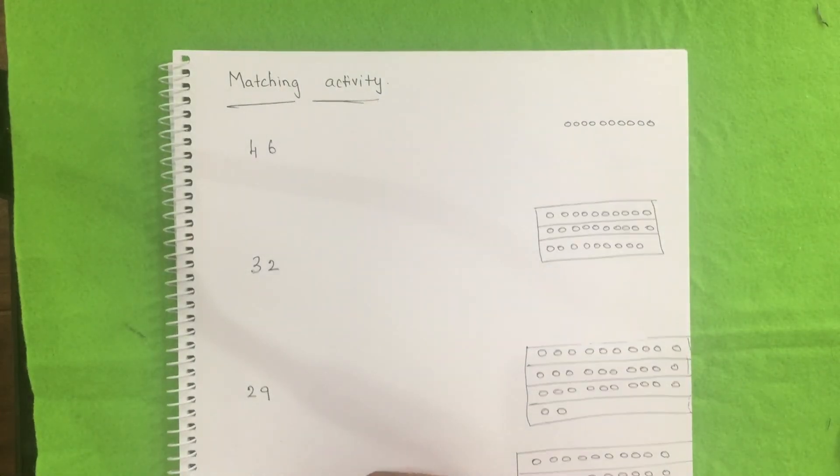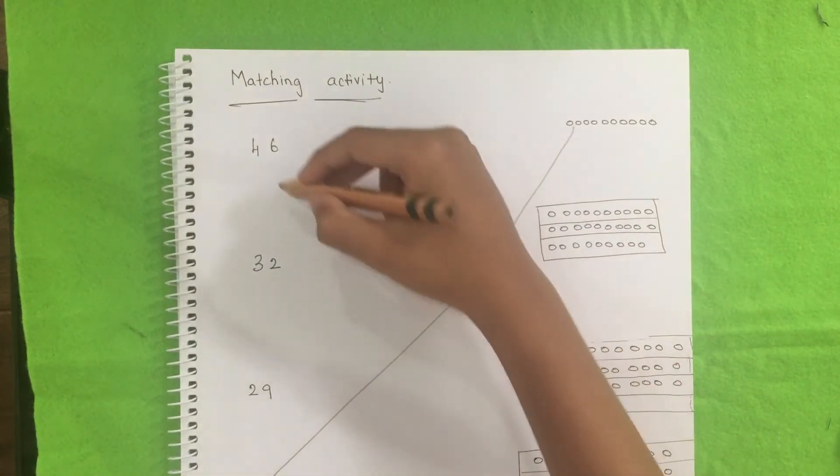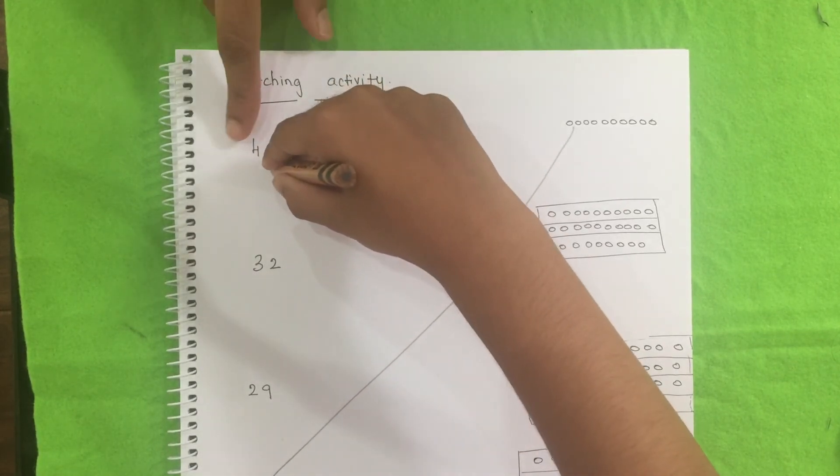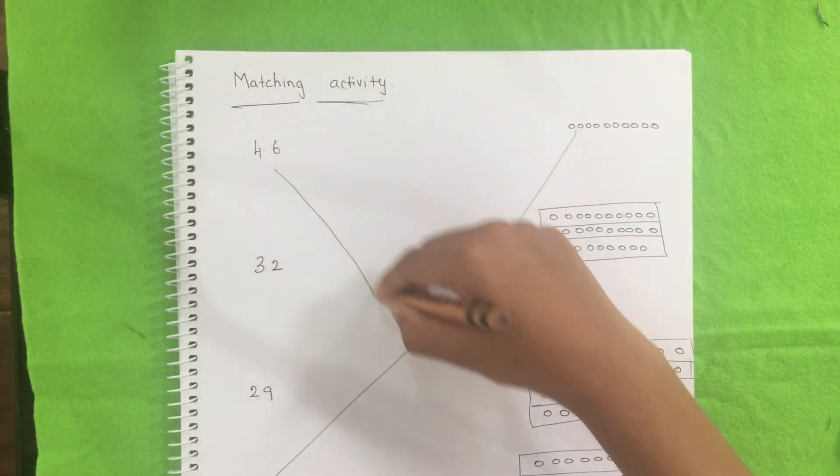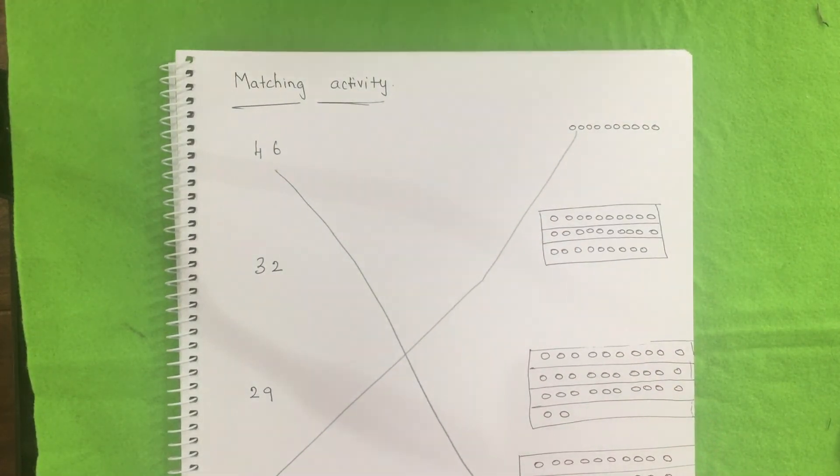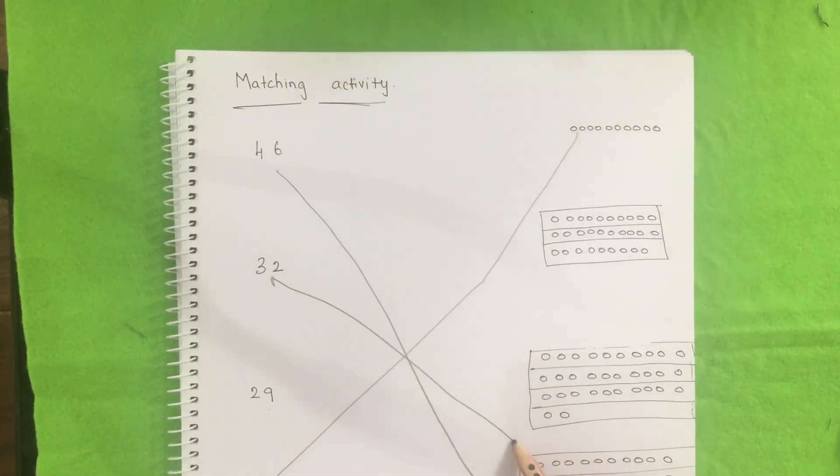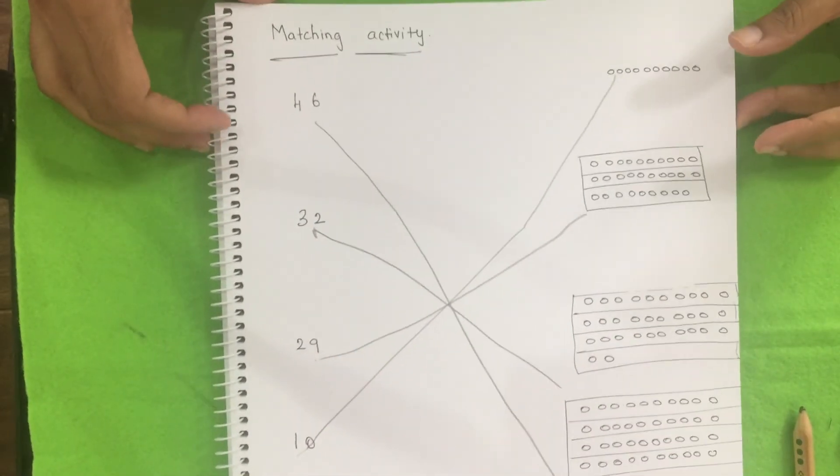This is a very simple matching activity. Actually, I just made this as an example that you can introduce it for younger kids. So I have given the number with the quantity cards. And what exactly has to be done is they just need to match the activity. So you can plan fun activities like this so that it will not be boring. At the same time, they will be keep on looking into the place values. So it will be a good review for them as well. Hope you all liked this video.